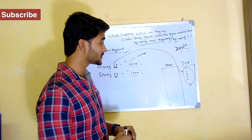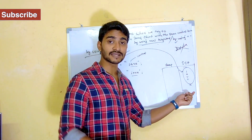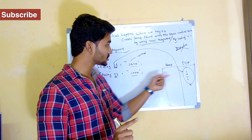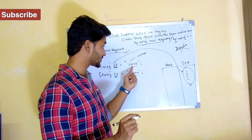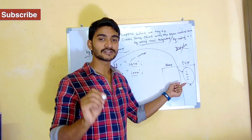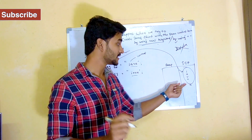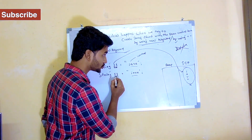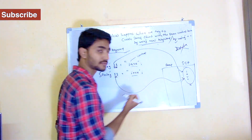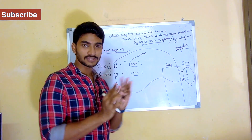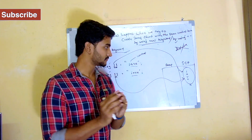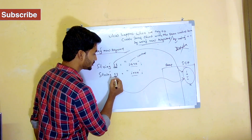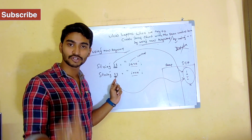So before JVM creates another object inside the string constant pool, first it is going to check: is 'Java' already present there? Yes, it's already present because of S1. So it is not going to create any other object. This S2 will also refer to the same object that was already created. I know it's a little tricky, but this is the fact. So if you try to print the S1 address and S2 address, both their references are going to be the same, because they're both pointing to one object.